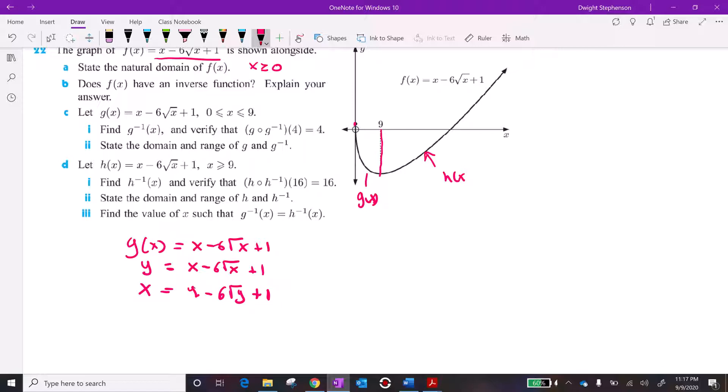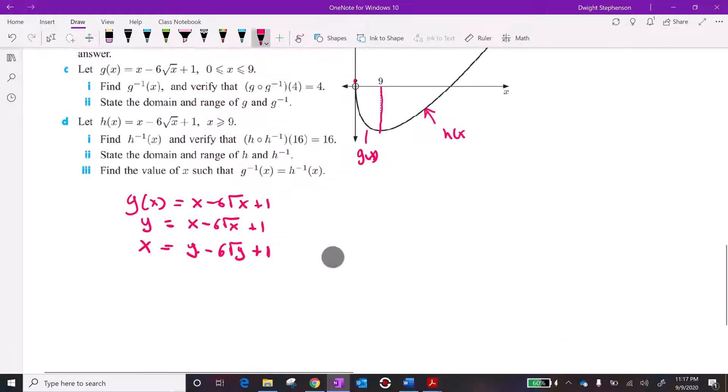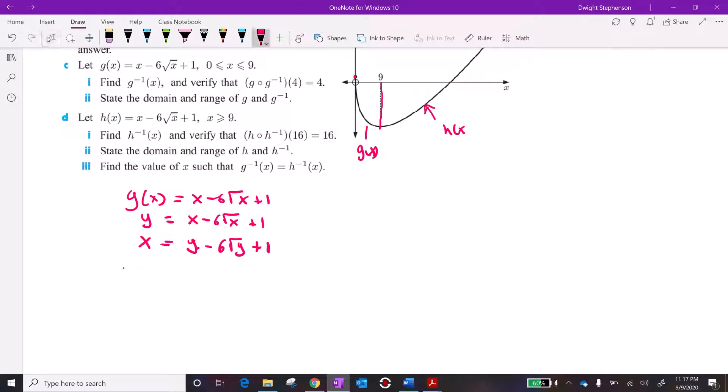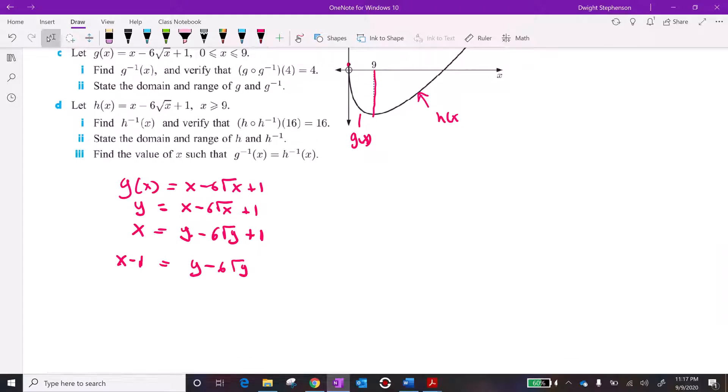Now we're working with the inverse function, and we're trying to solve for y. So let's start by moving the 1 over, so it's going to be x minus 1 equals y minus 6 square root of y. It's similar to problem 16 in that we basically need to complete the square on this. We need to create something that will multiply together, that's the same thing as something squared.